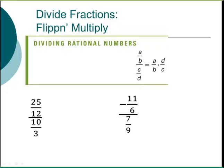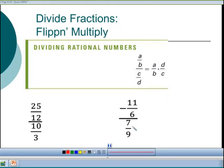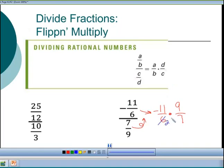For the negative example: negative 11/6 stays the same — never change the top. The denominator flips and multiplies to become 9/7. Then cross-cancel: reduce 6 and 9 by 3, giving 2 and 3. Multiply straight across: 11×3 = 33 on top, 2×7 = 14 on the bottom. Final result is negative 33/14.